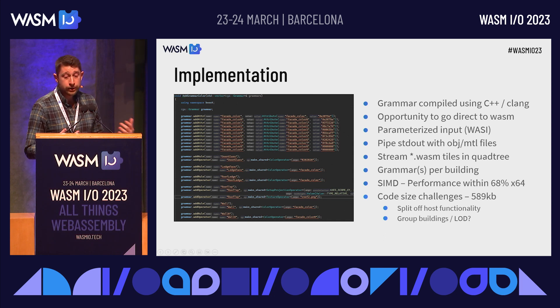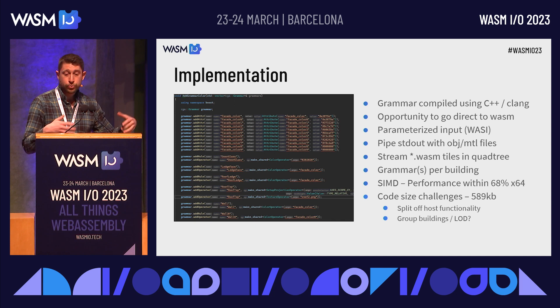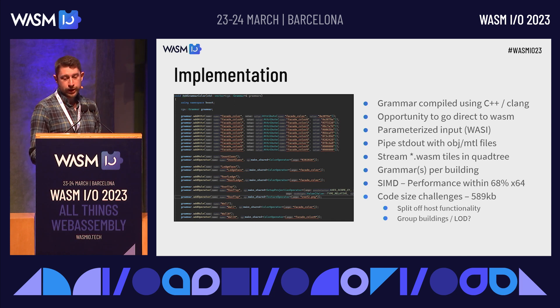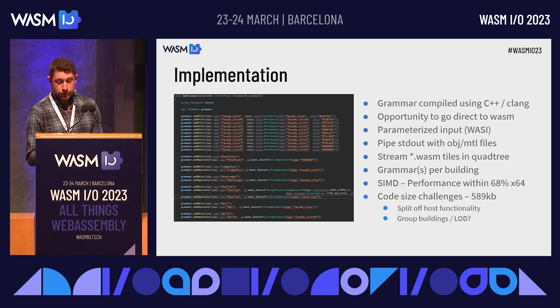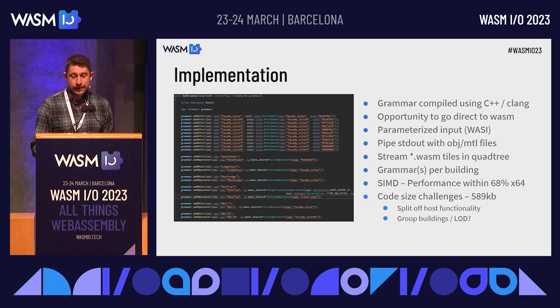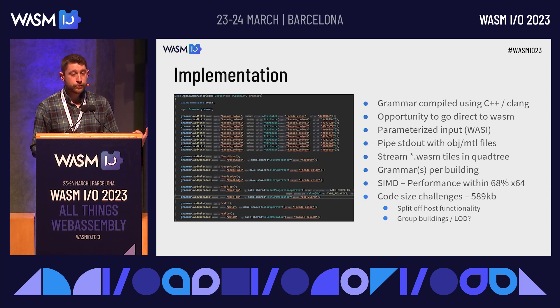For example, a city block or neighborhood can look kind of similar, so you can parameterize some of the inputs and add some randomness. As you zoom in close, you can then individually load a detailed individual building grammar as a form of level of detail.